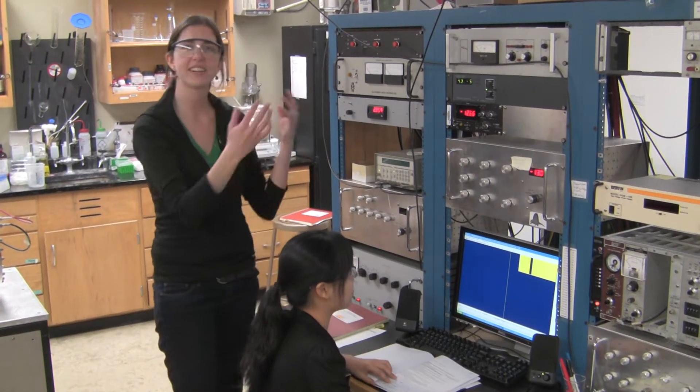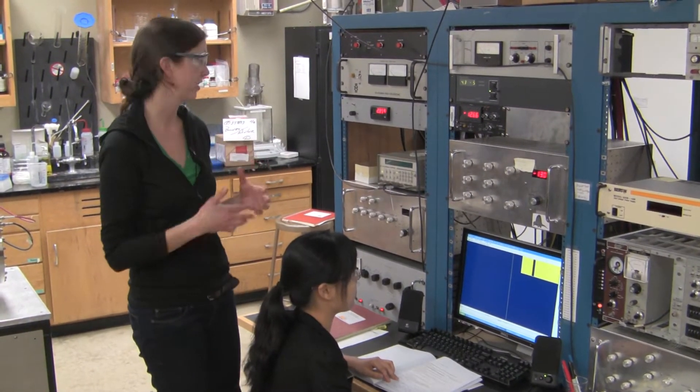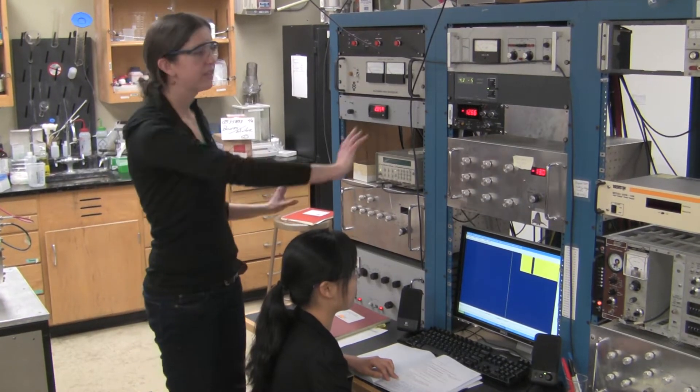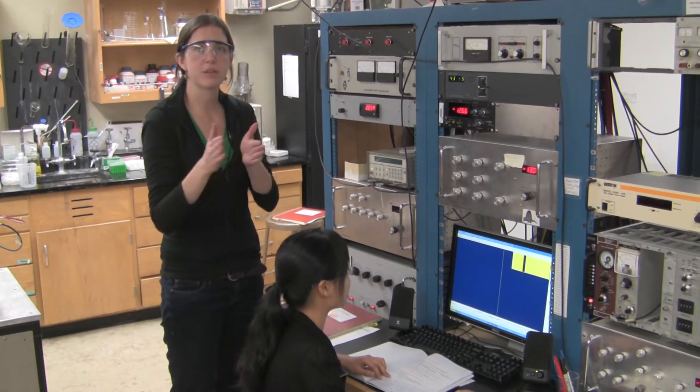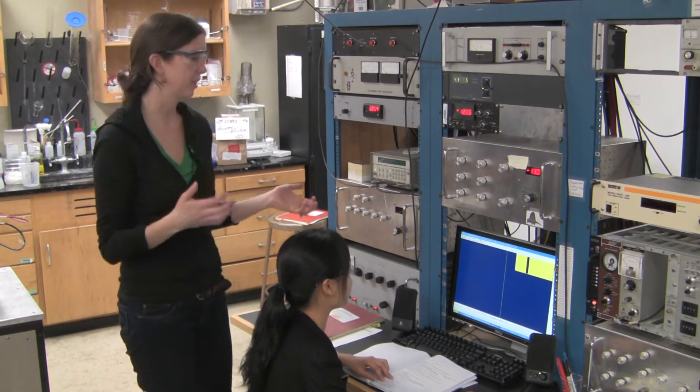So this is where we sit and collect our data during the experiment, during the ion mobility experiment. All of these knobs help us to control the ion optics on our instrument and focus the ion beam so we can improve our signal and get good data.